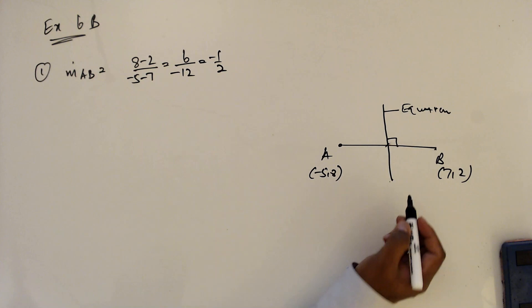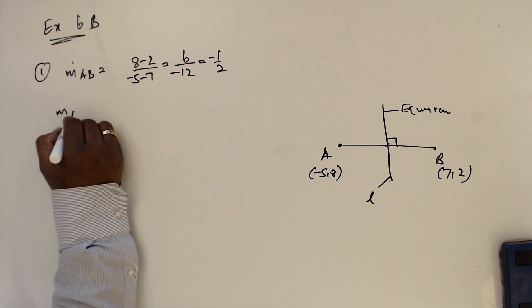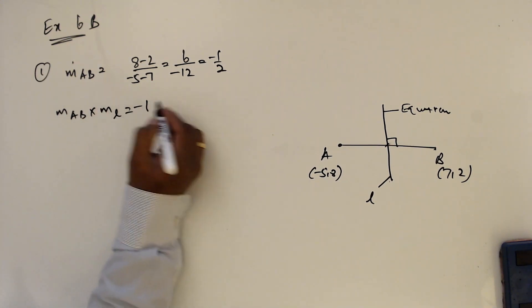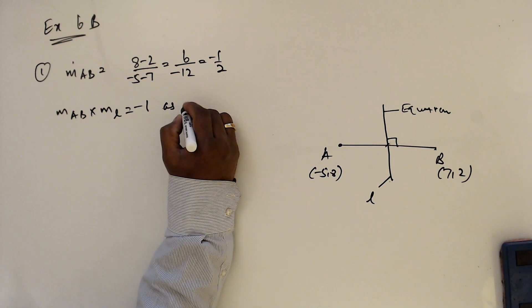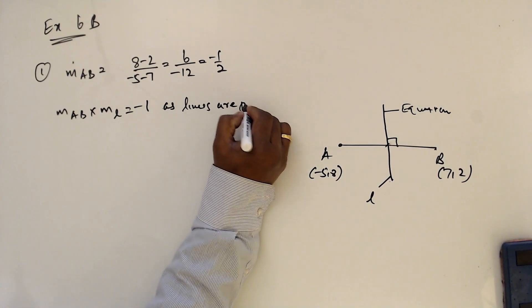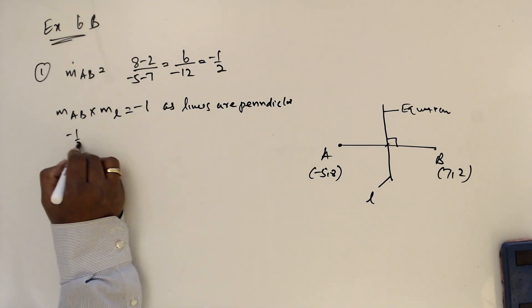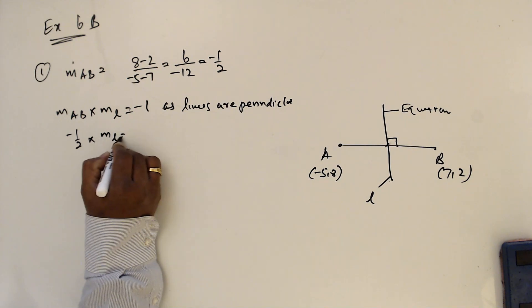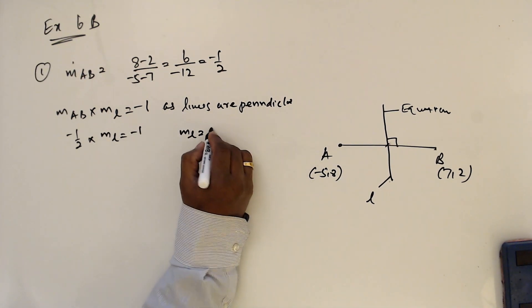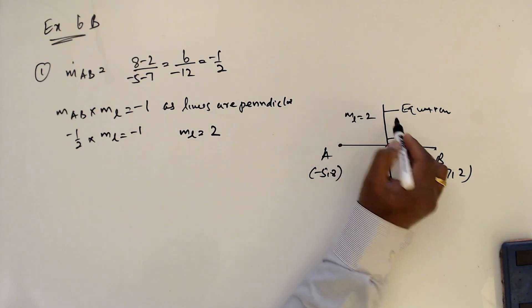I will name the perpendicular bisector L. We know that MAB times the gradient of L equals minus 1, since the lines are perpendicular. So minus one-half times ML equals minus 1, giving ML equals 2. Now I know the gradient is 2.